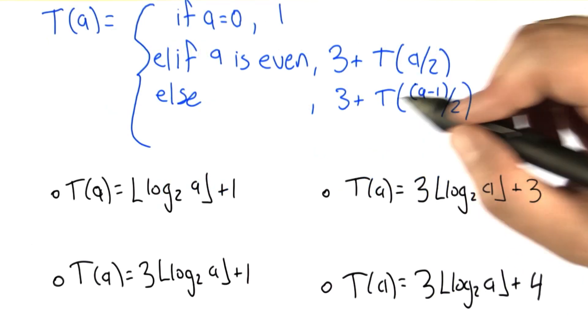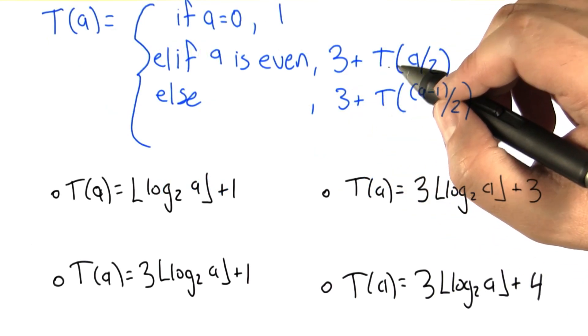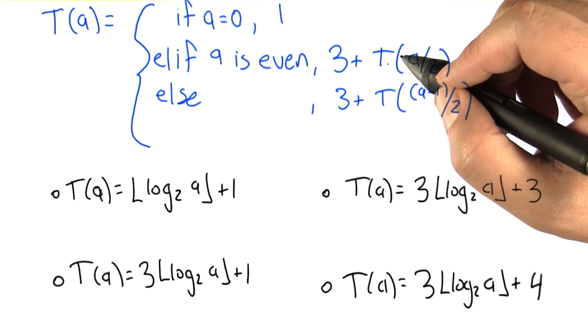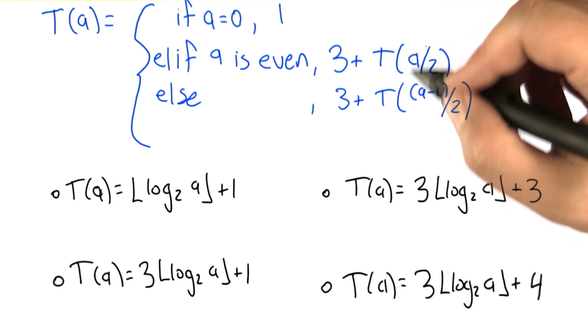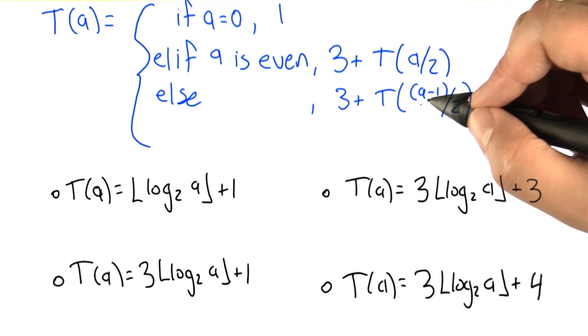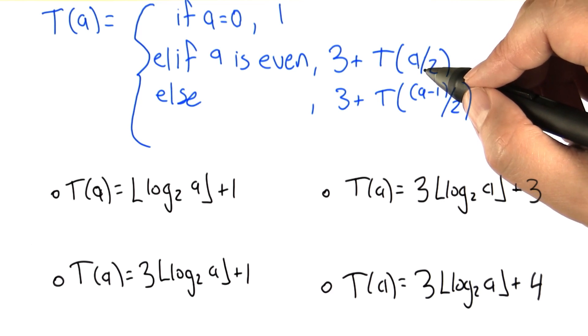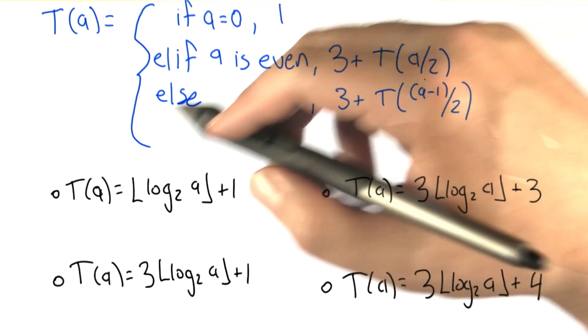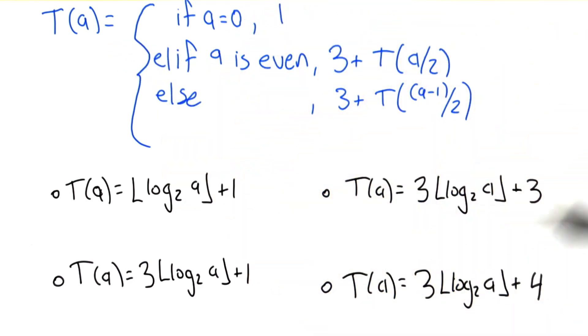Now, it turns out that you actually can solve this pretty easily by using what we already worked out about the number of times you can divide a number a in half, rounding down if it's odd, before you get down to 0. See if you can put that together to try to answer the question, what does t of a equal from these set of choices?